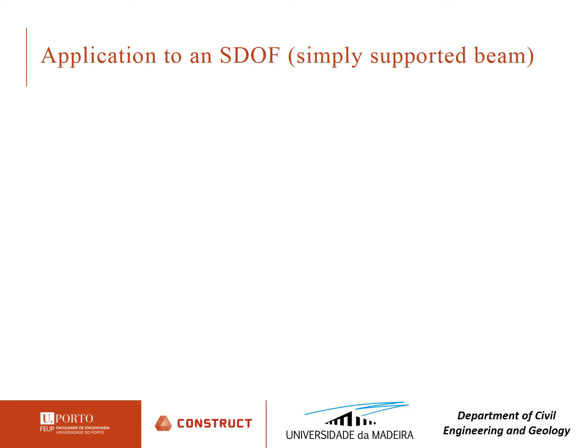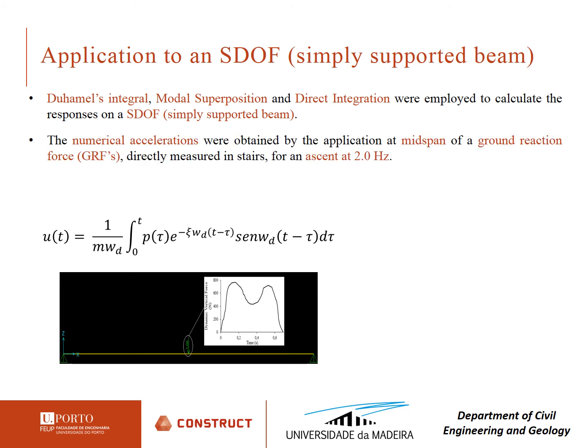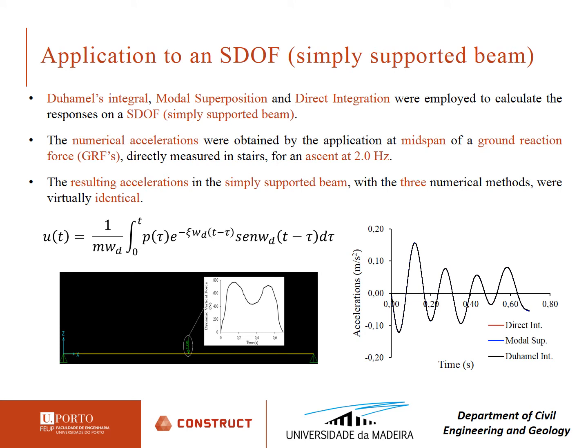First, to compare the different numerical methods, they were applied to a single degree of freedom simply supported beam in order to calculate its response. Since this is a single degree of freedom system, the Duhamel integral was also used as a third method for comparison. The numerical accelerations were obtained by applying at mid-span a ground reaction force directly measured from an ascent at 2.0 Hz. As can be seen from the acceleration graph, the resulting accelerations for the simply supported beam calculated with Duhamel's integral, modal superposition, and direct integration were virtually identical.